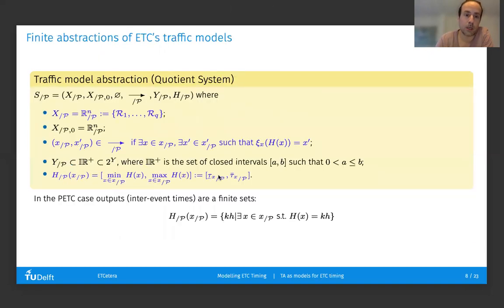This is done in ETCetera by constructing so-called quotient systems. The idea is to partition the state space, place transitions between regions where in the initiating region there's a point that, after its associated event-triggered sampling time, is mapped to a point in the landing region x prime. More interestingly, the outputs associated with the region will be, in this case, not a single value of time, but a time interval capturing all possible inter-event times that one can see for points inside a given region.